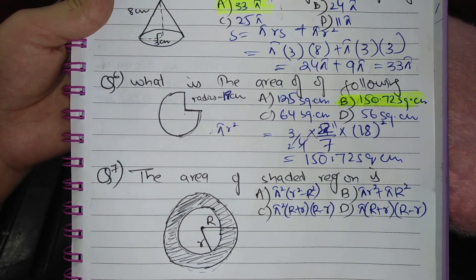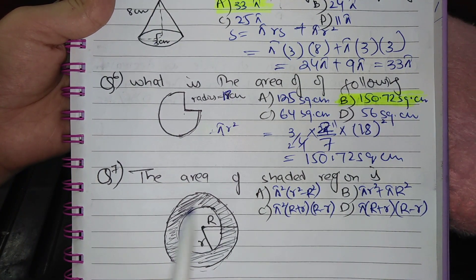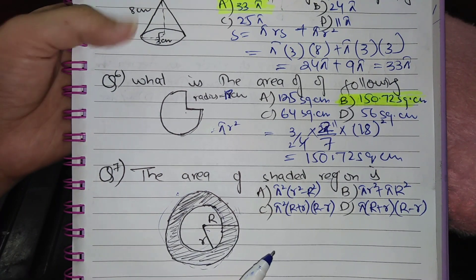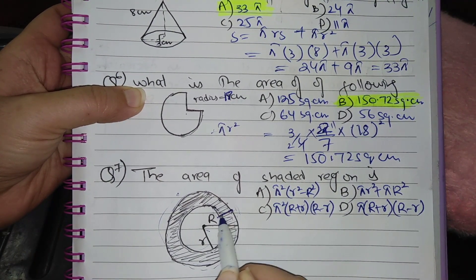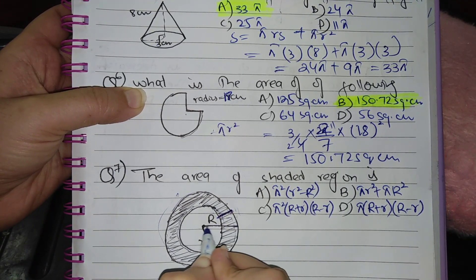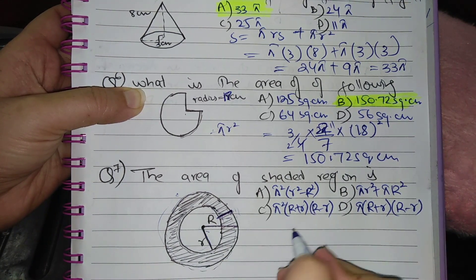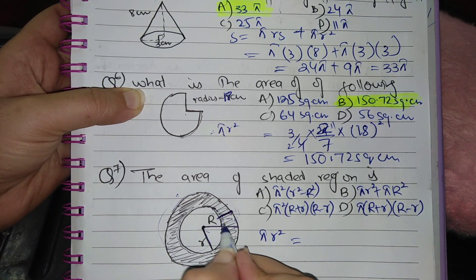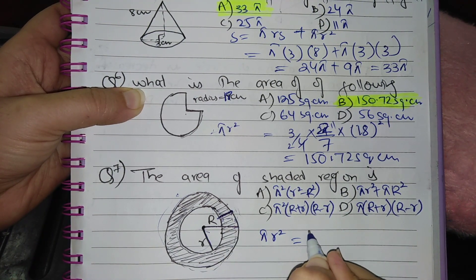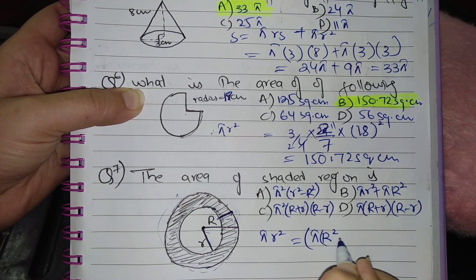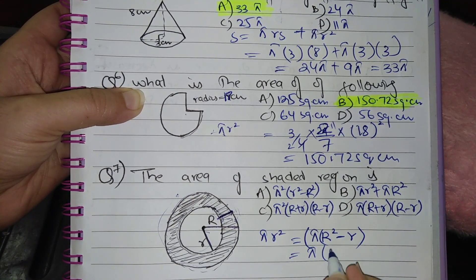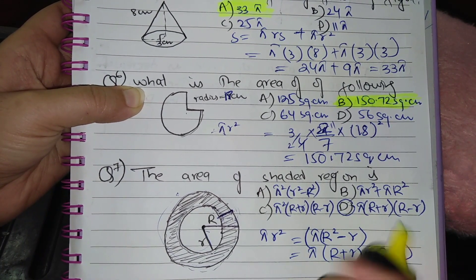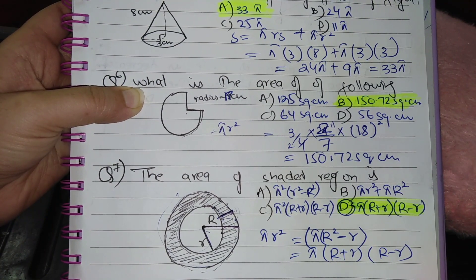Question 7: Find the area of the shaded region between two circles. First find the outer circle area, then the inner circle area, and subtract. The larger circle has radius R and the smaller has radius r. Area of shaded region = πR² − πr² = π(R + r)(R − r). The correct option is D: π(R + r)(R − r).